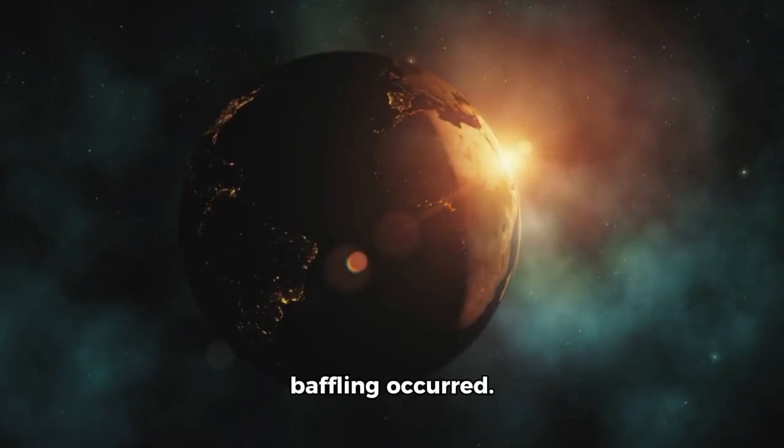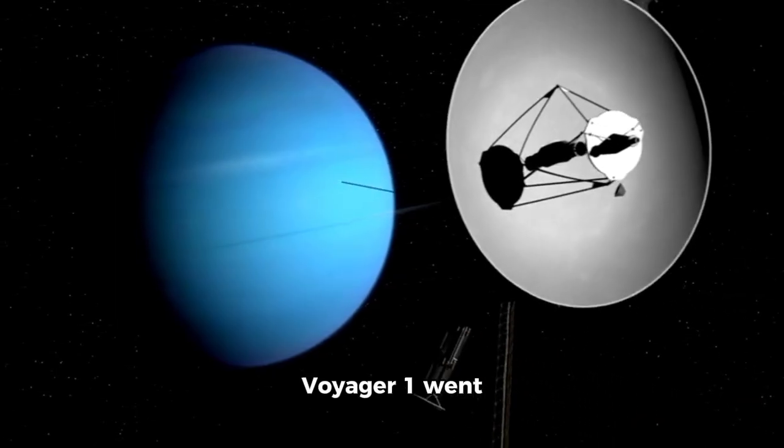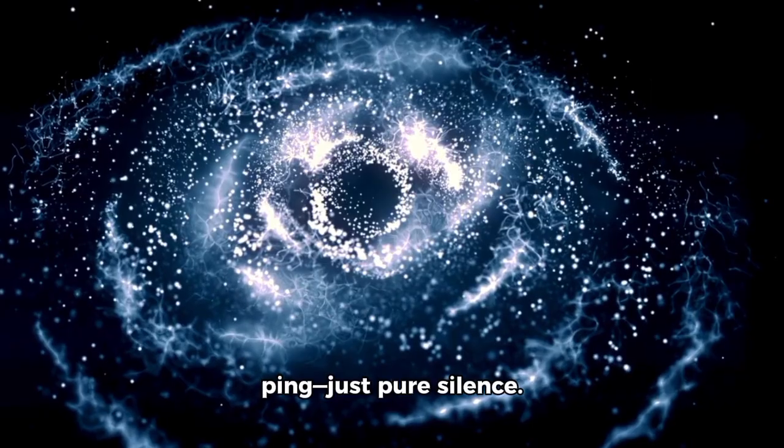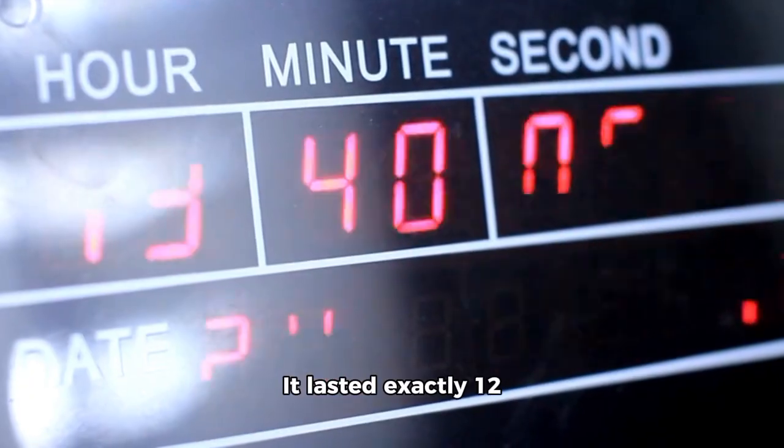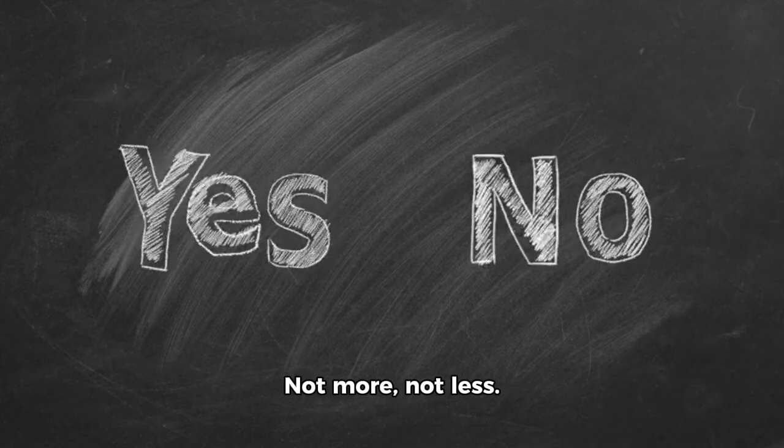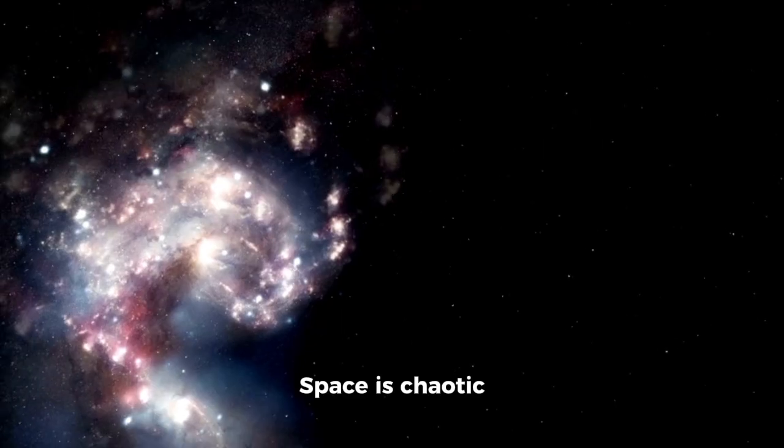Then something even more baffling occurred. On June 5, 2025, Voyager 1 went completely silent. No static, no ping, just pure silence. It lasted exactly 12 minutes and one second. Not more, not less. That level of accuracy isn't typical of a hardware malfunction. Space is chaotic and unorganized. Yet, this perfect blackout suggested intelligence or a synchronized event.